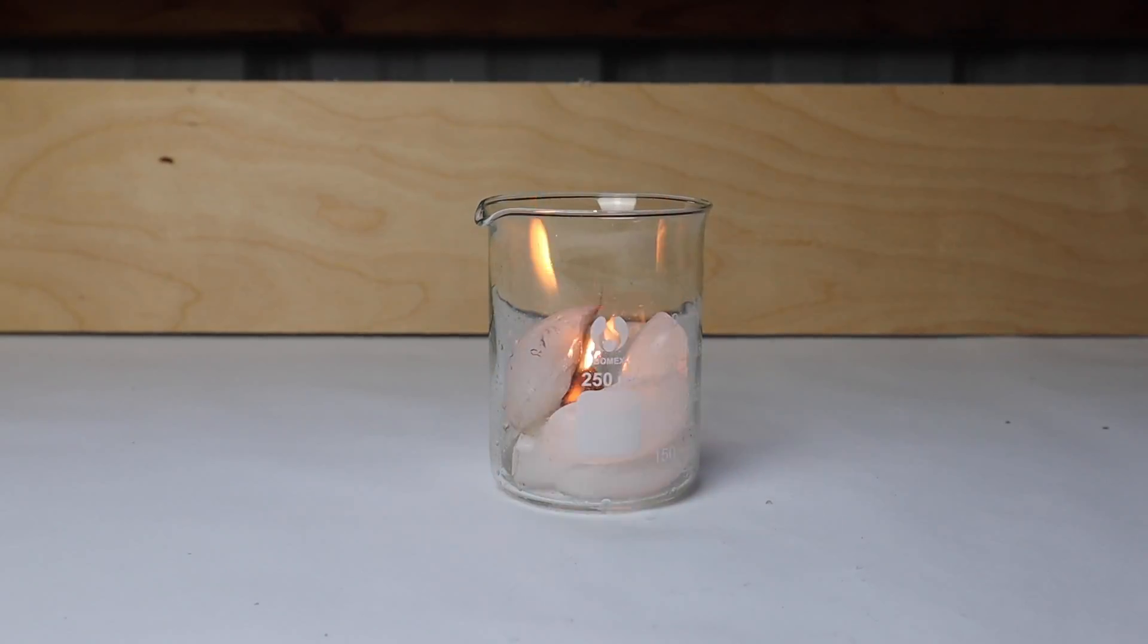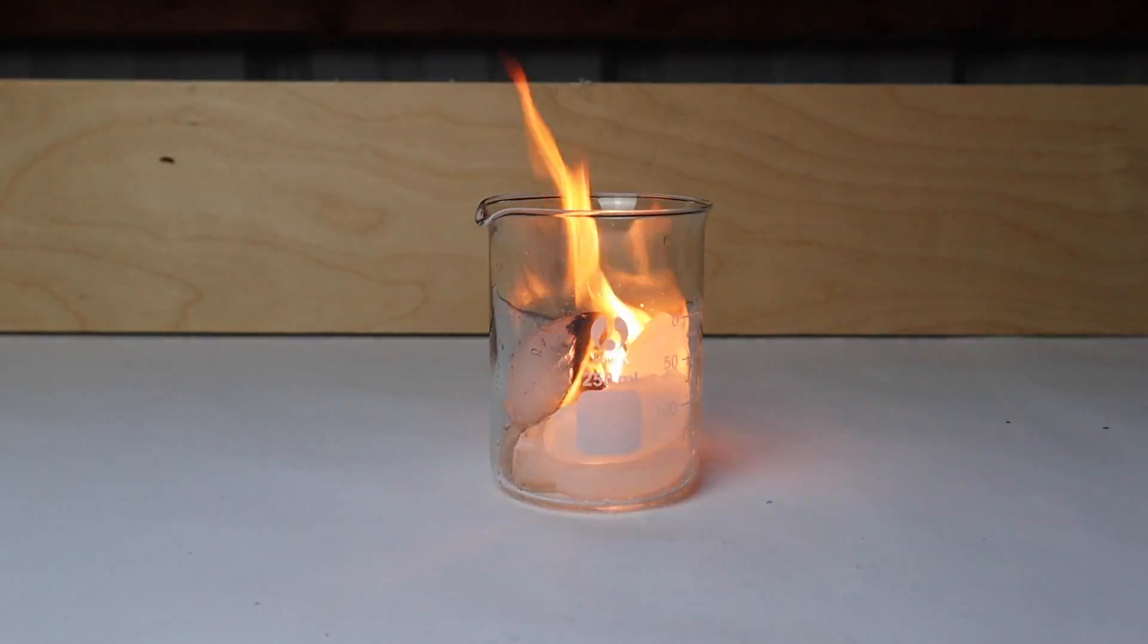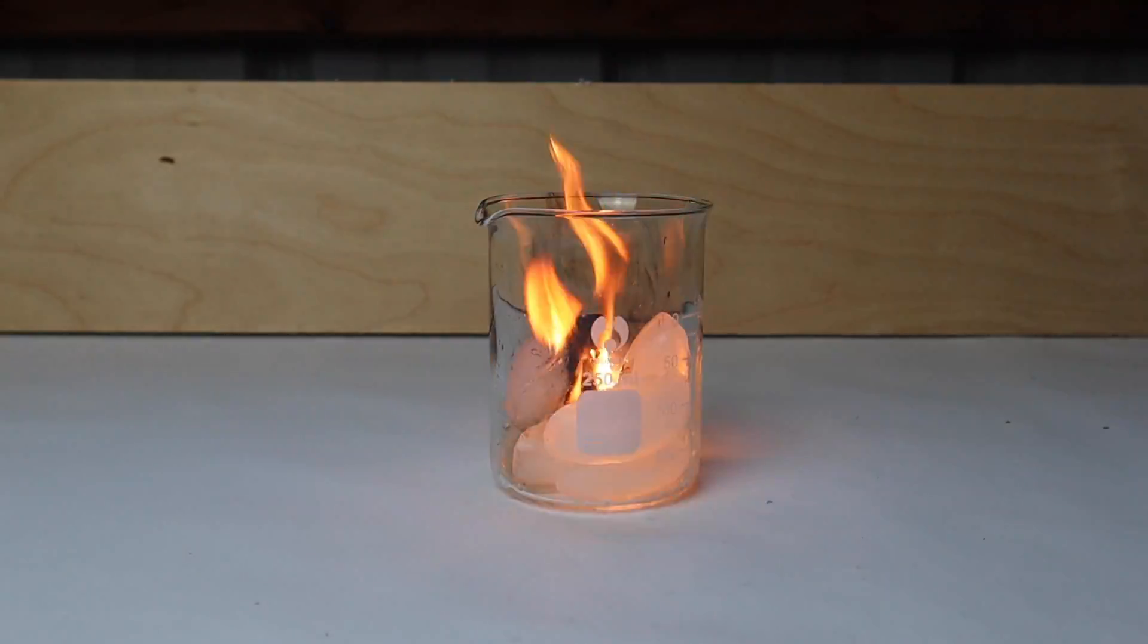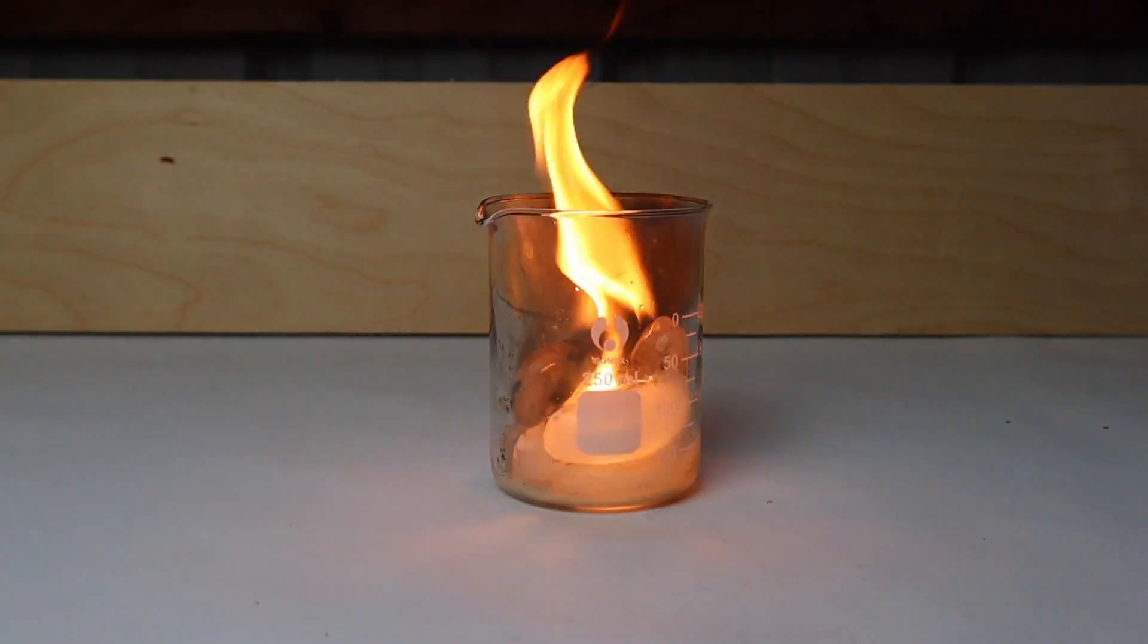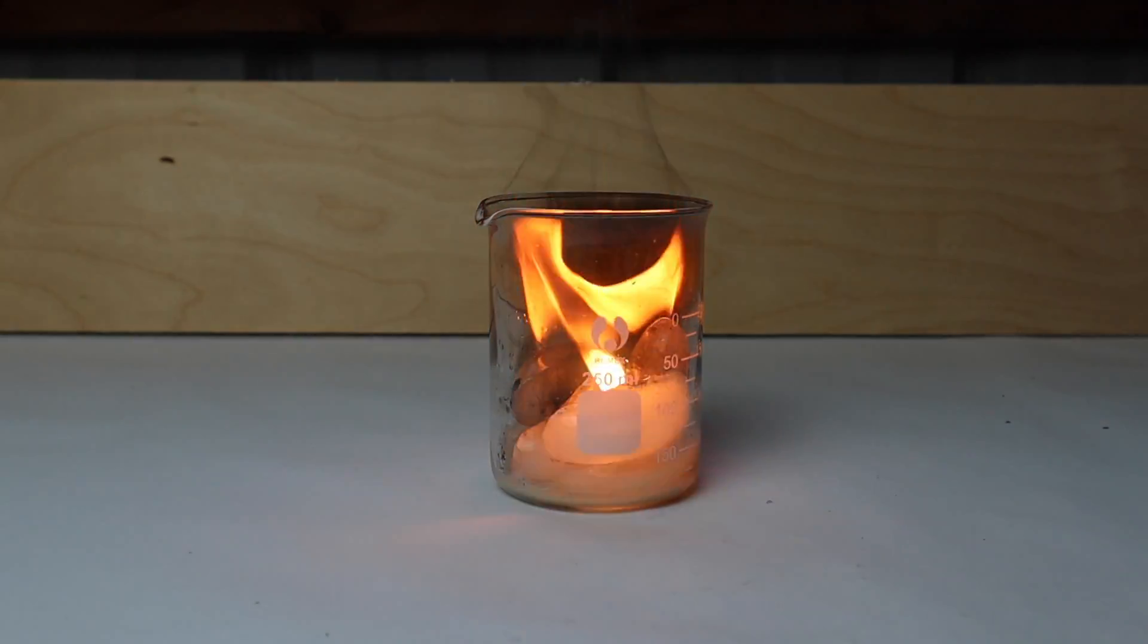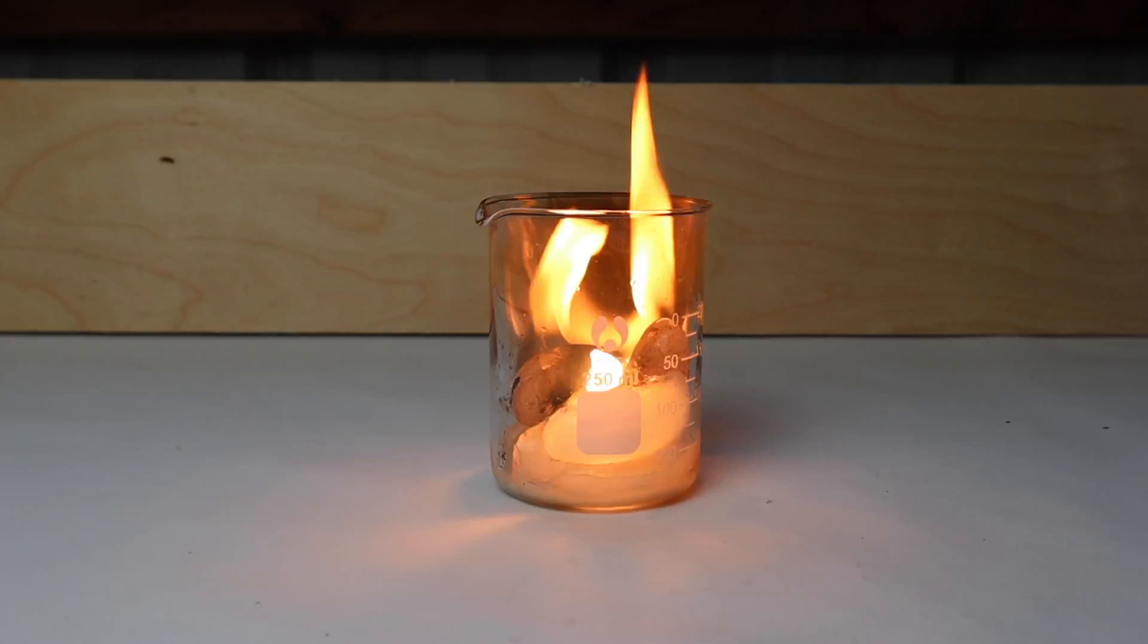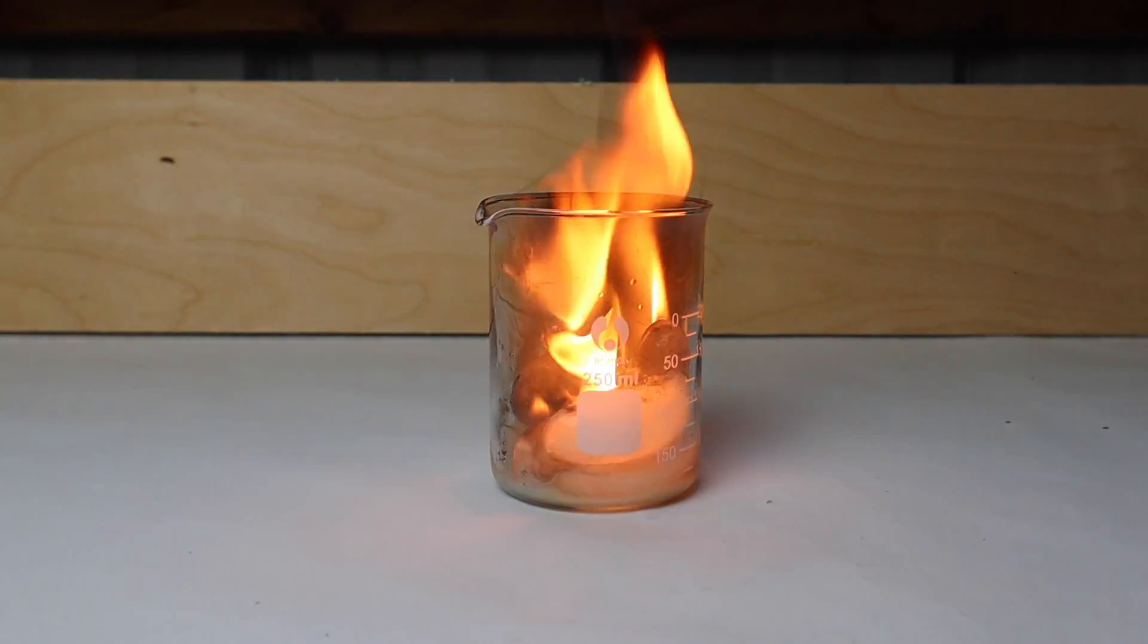That looks more like it. This reaction is now producing acetylene gas as well as calcium hydroxide. As you can see, the ice rapidly starts to melt and this allows for the calcium carbide to react with even more water to create even more acetylene.